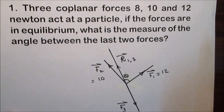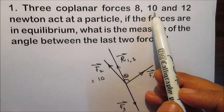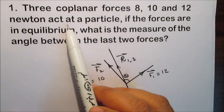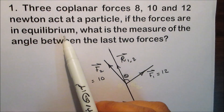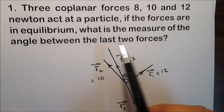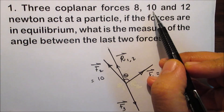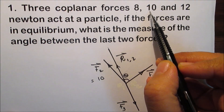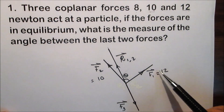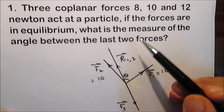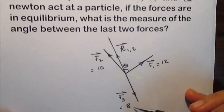Example 1: Three coplanar forces, 8, 10, and 12 newtons, act at a particle. If the three forces are in equilibrium, what is the measure of the angle between the last two forces? To find the measure of the angle between the last two forces, 10 and 12, we have F1 equals 12, F2 equals 10, and F3 equals 8 newtons.